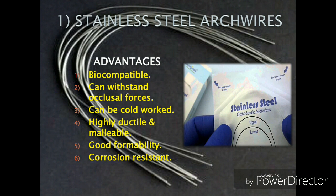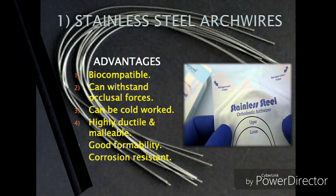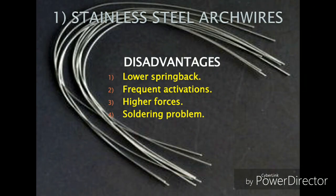Regarding the advantages of stainless steel arch wires: first, it is a biocompatible alloy. Second, it has the capability to withstand high occlusal forces due to its high stiffness. Third, it can be cold worked without the risk of fracture. Another advantage is good formability, which is helpful when used as orthodontic bands or ligatures, and is also useful when many small stainless steel wires are twisted together to form multi-stranded arch wires. These arch wires are also corrosion resistant, except at joints where soldering or welding is performed.